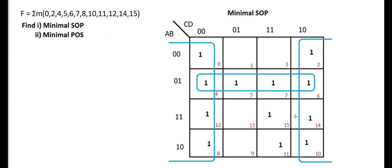Now the left-out ones are these two. When we see two remaining ones, we should not immediately make them a pair. We have to check if the already-grouped ones can help us form a quad. These two ones are helping us make a quad, so we group them as a quad. Now we have grouped all the ones with no left-out ones.